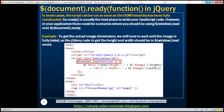Let's say we want to get the actual image dimensions — that is, height and width. If we have to get the actual image height and width, we will have to wait until the image is fully loaded. So the jQuery code to get the height and width should be in the window.load event handler. Let's look at an example of that.